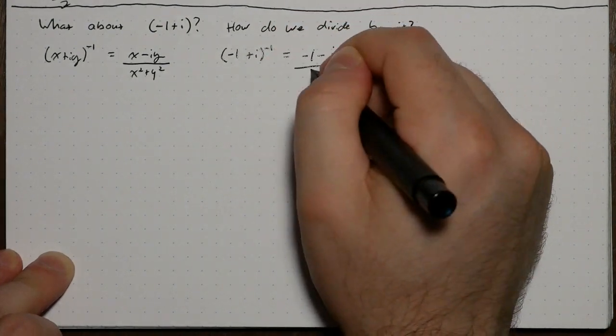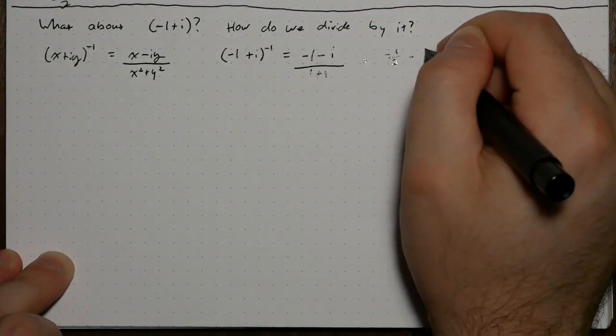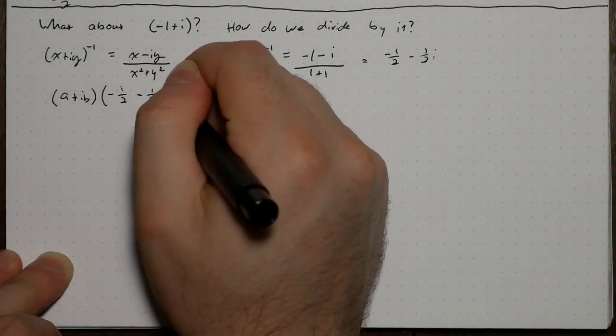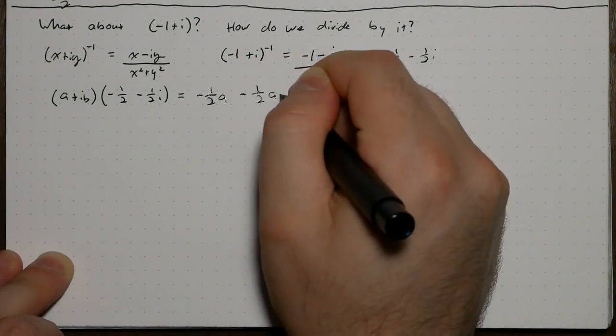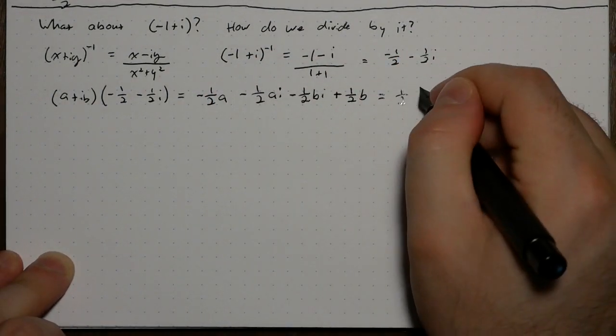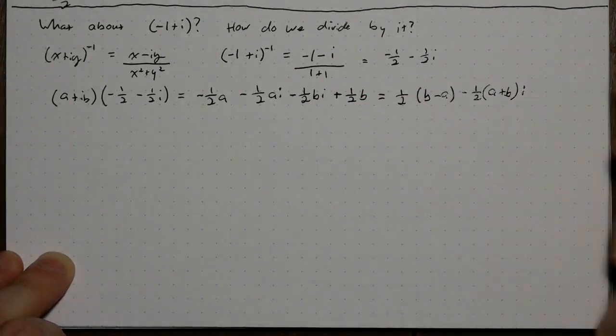and you end up with negative 1 half minus 1 half i. What happens when you multiply by negative 1 half minus 1 half i? You get 1 half times b minus a minus 1 half times a plus b times i.